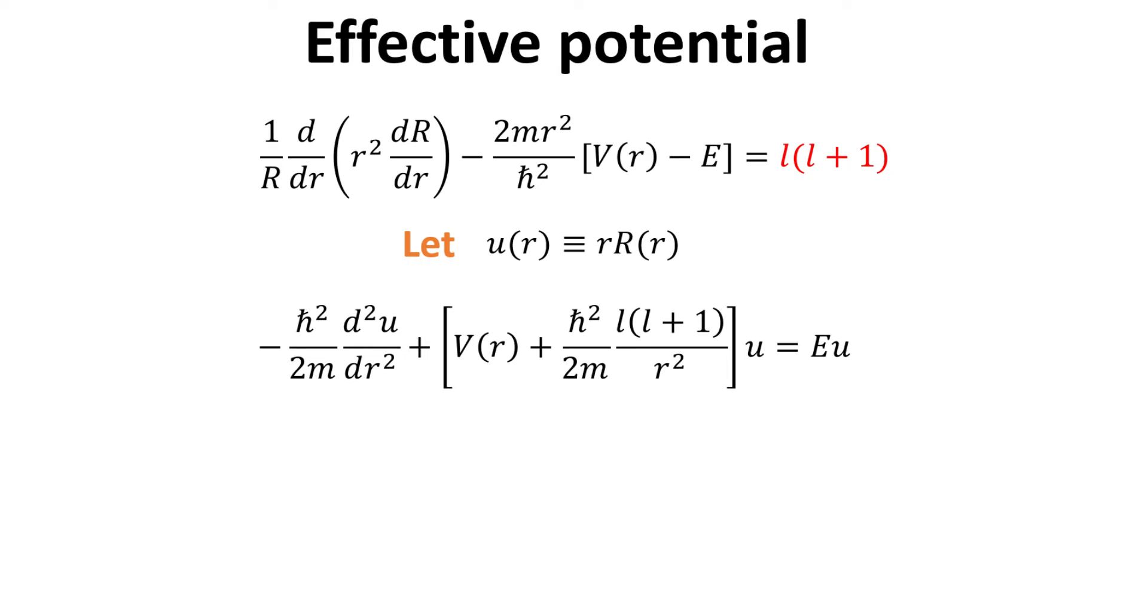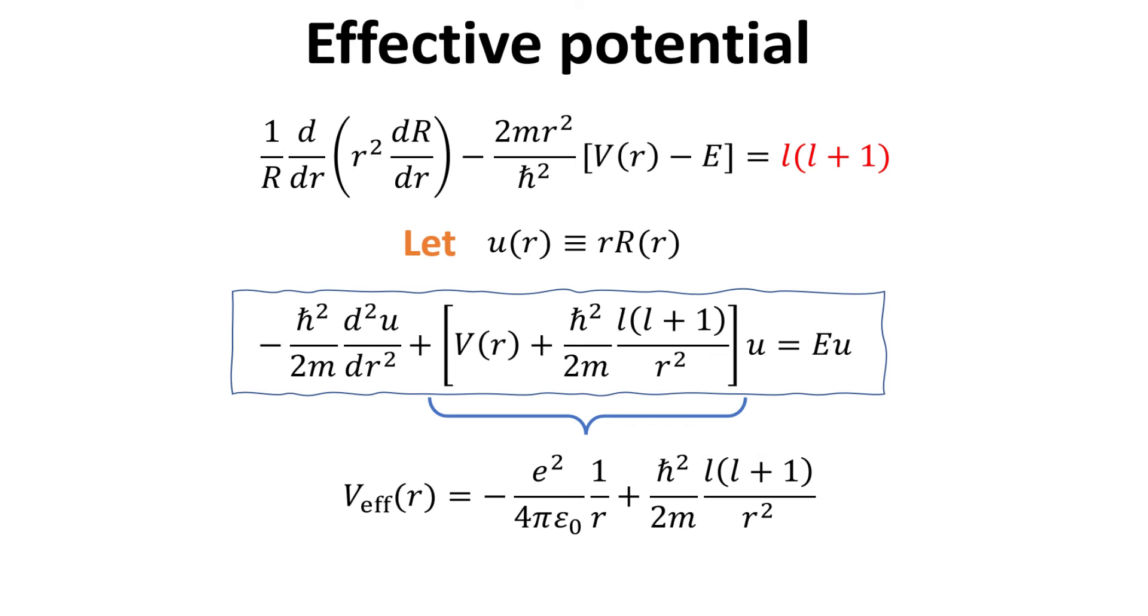Substituting this new function U into the radial equation, we arrive at a new second-order differential equation for the function U. We see that this new radial equation has the same form as the Schrödinger equation, if we define a new effective potential as shown.